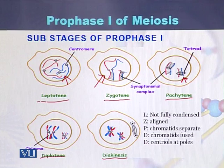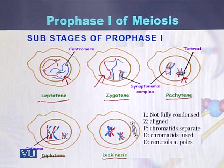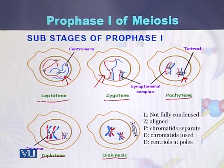In Diplotene, the chromatids fuse with each other. The chiasmata that are formed during the fusion belong to homologous chromosomes — these are not the sister chromatids, they are called non-sister chromatids. In Diakinesis, centrioles divide and take their positions at the poles.